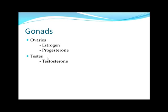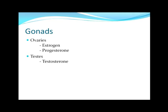Finally, we have the gonads — ovaries and testes. Ovaries produce two hormones: estrogen and progesterone. Estrogen is involved in developing secondary sex characteristics and has a role in the monthly cycle by building up the endometrial lining of the uterus for potential fertilization. Progesterone is the pregnancy hormone, produced by the corpus luteum — what remains after an egg is ovulated. It further builds up the endometrial lining in preparation for potential fertilization. The testes produce testosterone, which causes male secondary sex characteristics and aids in sperm production.